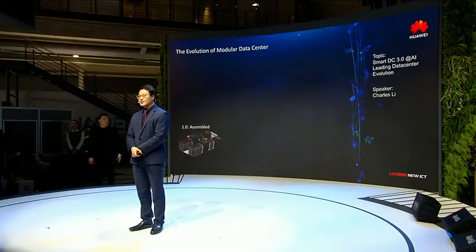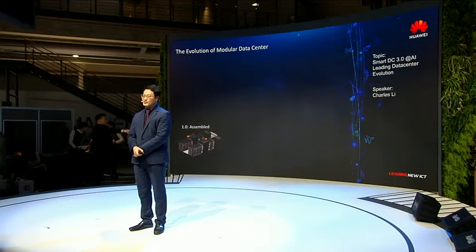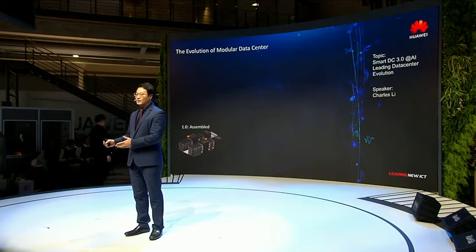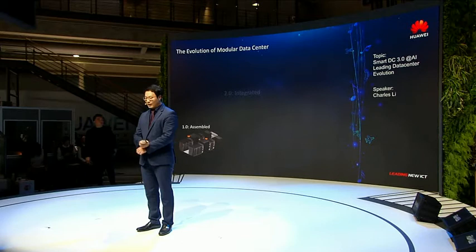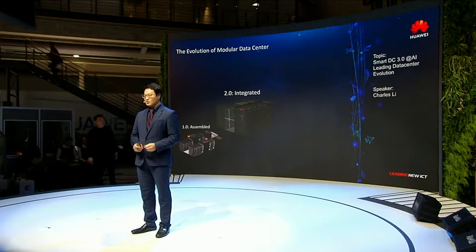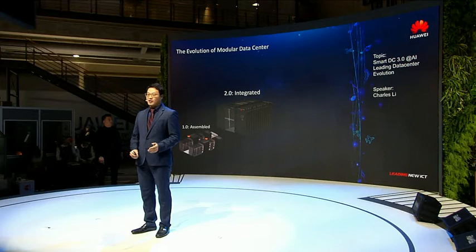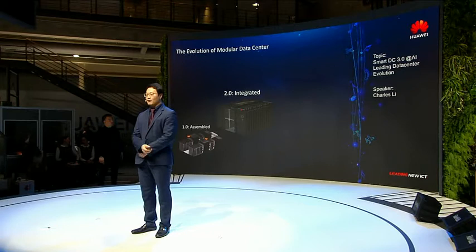Here is my presentation. Everyone knows we have three generations of data centers from Huawei. The first generation is simply an assembly of different subsystems including the power system, the cooling system, the IT cabinet, and network cabinet. The second generation is an integrated solution — not only assembling different subsystems but also providing standard and modular design, enabling data centers to be built very fast with high availability.